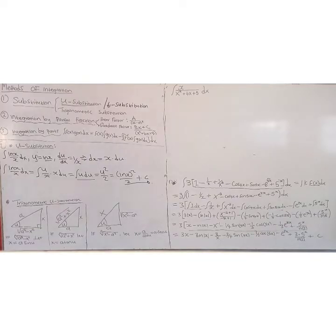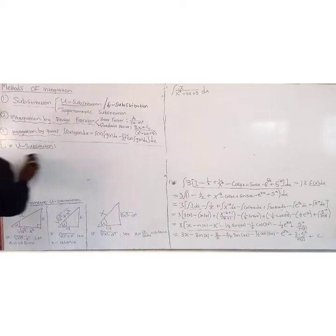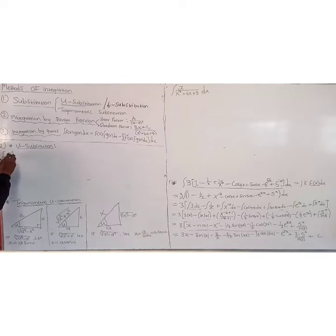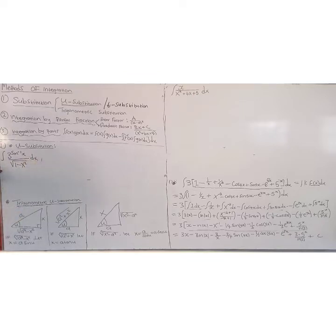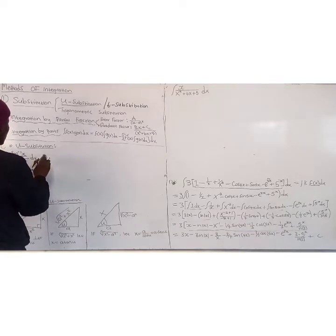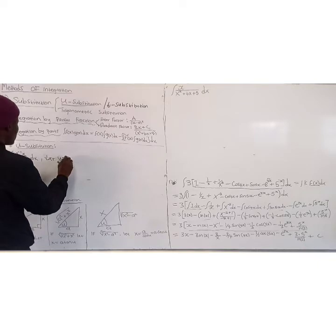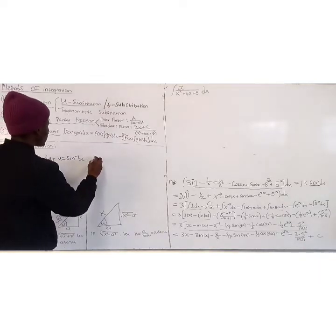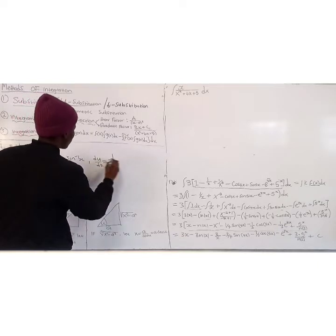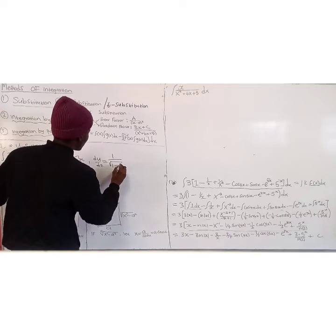Now let's consider the second example. Suppose we need to integrate 3 to the power sin-inverse of x, divided by the square root of 1 minus x squared, dx. Here we let u equal sin-inverse of x. The derivative of u with respect to x is 1 over the square root of 1 minus x squared.